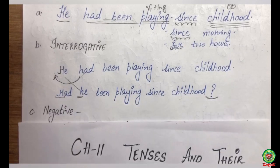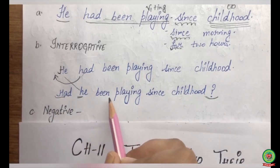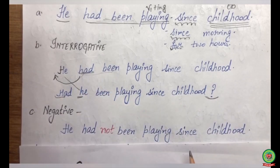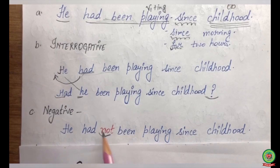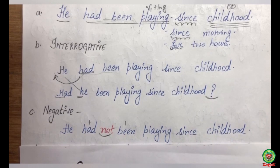After this we have the negative sentence — it's very easy. To make a negative sentence we need a helping verb, and we already have the helping verb 'had been.' What we have to do is just add 'not' in the middle of 'had been.' So: 'He had not been playing since childhood.' That will be your negative sentence.